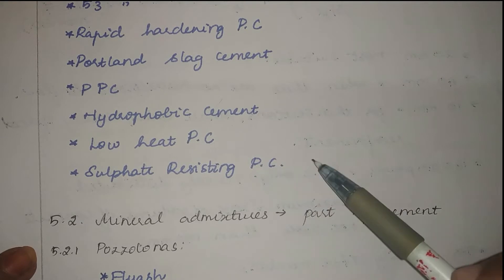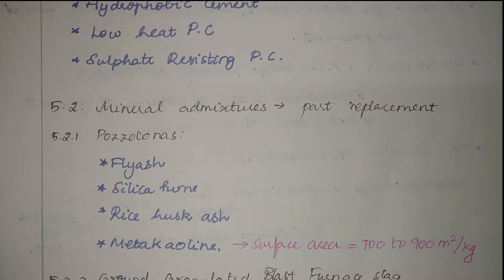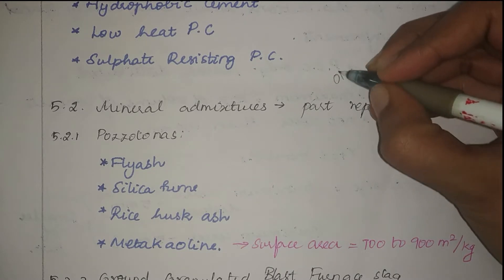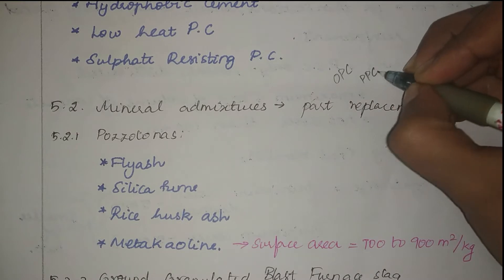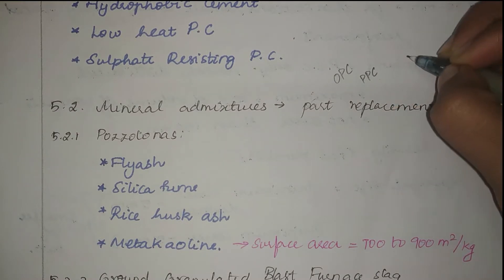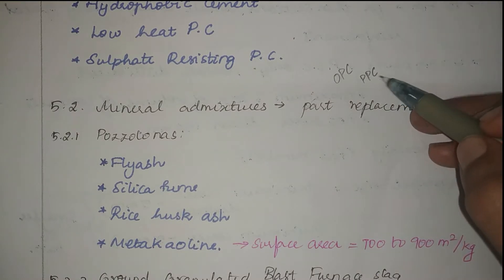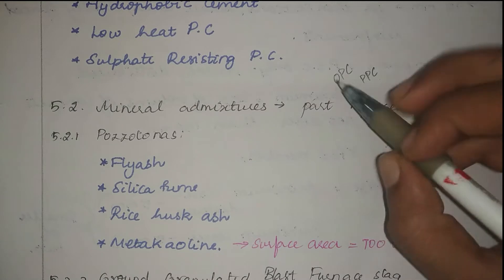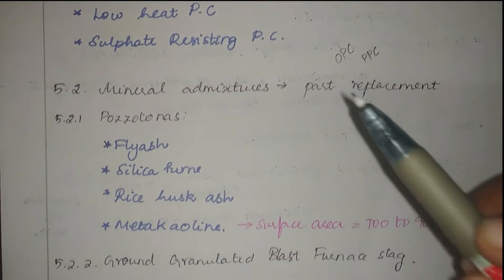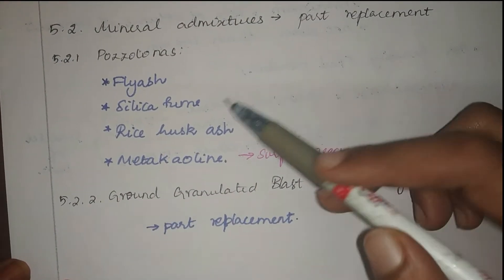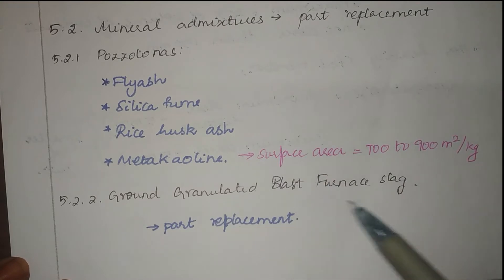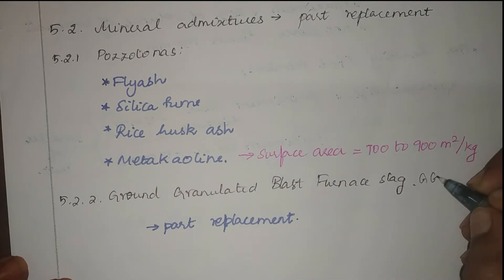Sulfate resisting Portland cement is also listed. However, nowadays ordinary Portland cement is not available — the government has stopped its production. We only have PPC, which is Portland pozzolana cement. In PPC, part of the cement is replaced by mineral admixtures, which can be either pozzolana or ground granulated blast furnace slag, known as GGBS.